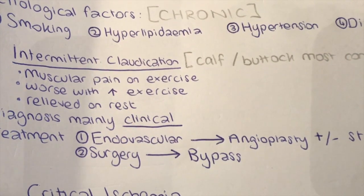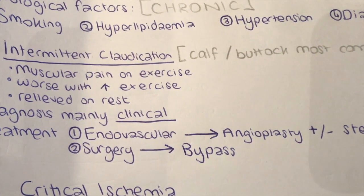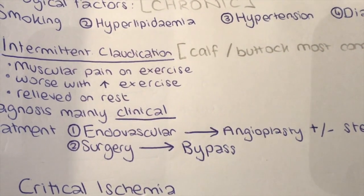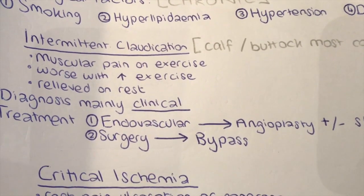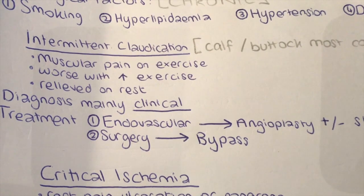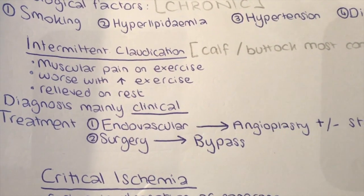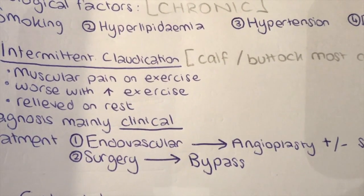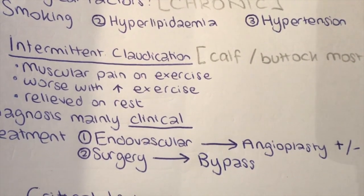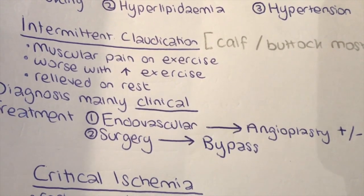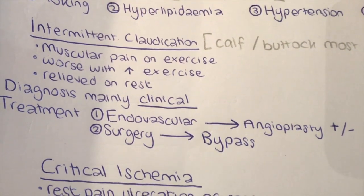The first option is endovascular treatment, which is not open surgery. This involves angioplasty plus or minus a stent. Angioplasty is when they go inside the vessel and inflate a balloon to increase the diameter of the vessel, and depending on whether this works, they can decide whether a stent is needed. Endovascular treatment works better higher up — it has better results in the aorto-iliac segment compared to the popliteal artery.